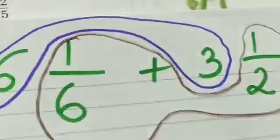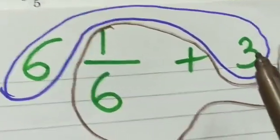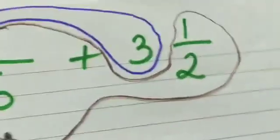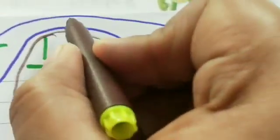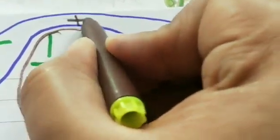So whole number will be added with the whole number and the fraction will be added with the fraction.